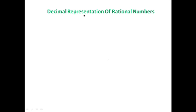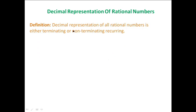Today let's look at decimal representation of rational numbers. As a definition, decimal representation of all rational numbers is either terminating or non-terminating recurring. Let's look at this through a few examples.